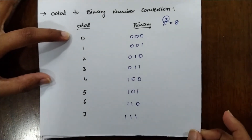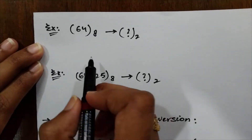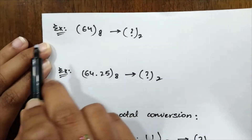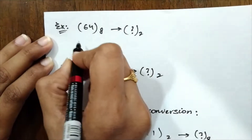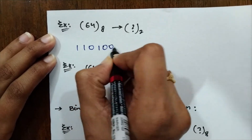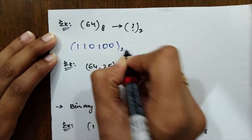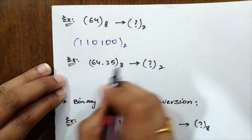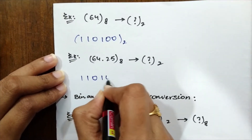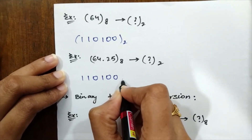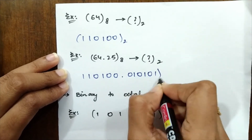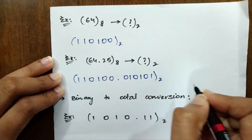Now let's get into examples. First example: convert 64 from octal into binary. 6 stands for 110 and 4 is 100, so the binary format is 110100. Next example: 64.25 in octal. 6 stands for 110, 4 stands for 100, dot, 2 is 010, and 5 is 101. So the binary format is 110100.010101.